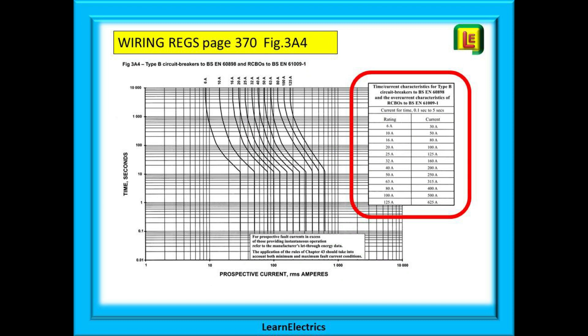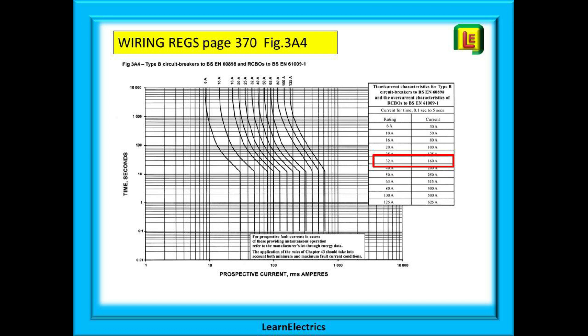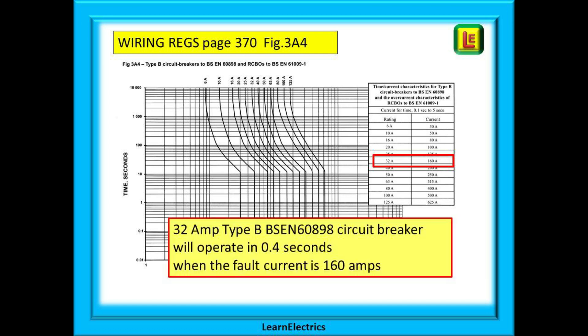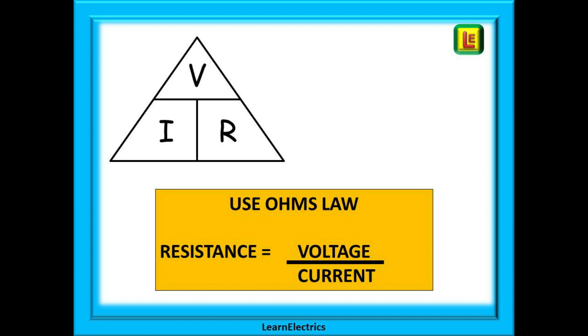Look now at figure 3A4 in appendix 3 of the wiring regulations, on page 370. This page is specifically for type B circuit breakers and RCBOs. We are interested in the chart on the right-hand side. The chart heading tells us it gives figures for any disconnection time between 0.1 seconds and 5 seconds, so our 0.4 second requirement fits neatly into it. Our circuit breaker is 32A — the left column — and the right column tells us that this size of device needs 160A of fault current to pass through it to achieve that 0.4 second disconnection time.